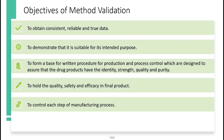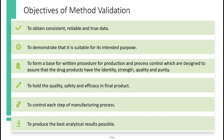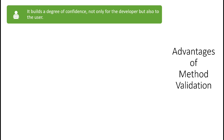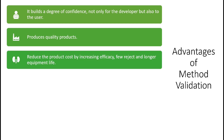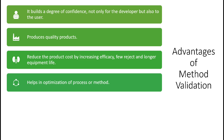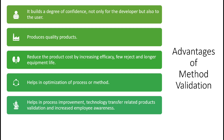To control each step of the manufacturing process and to produce the best analytical results possible. The advantages of carrying out method validation include: it builds a degree of confidence for both the developer and the user; it produces quality products; it reduces product cost by increasing efficacy; batch rejections are reduced; and equipment life is prolonged through equipment validation and maintenance. It also helps in optimization of the process or method, saving time, resources, and cost, and aids in process improvement, technology transfer, and increased employee awareness.